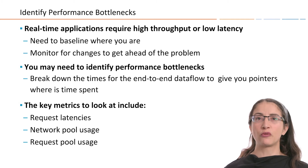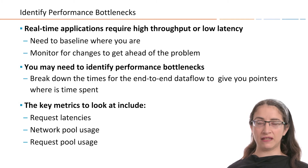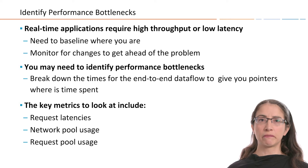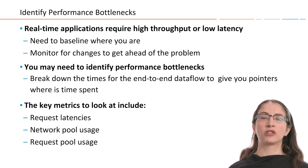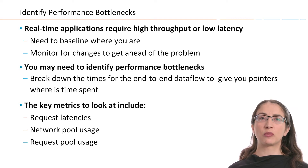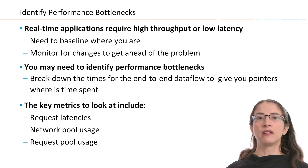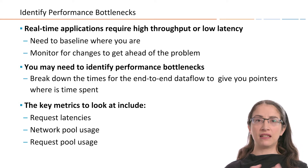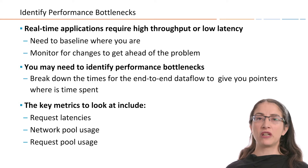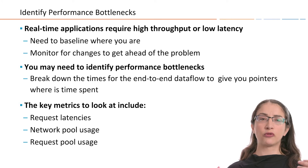Real-time applications require high throughput or low latency. The process we will go through is to start by monitoring your current performance to understand what your baseline is. Then we will use the Control Center metrics to identify those performance bottlenecks. The key metrics to watch are request latency, network pool usage, and request pool usage. We will learn how to use this information to tune the system and improve performance.